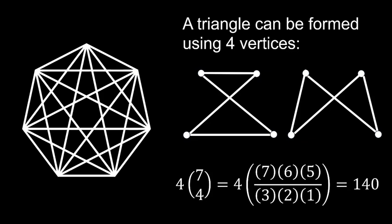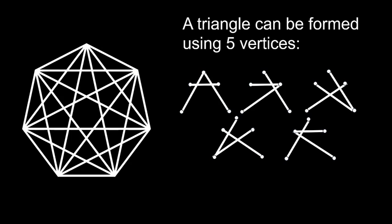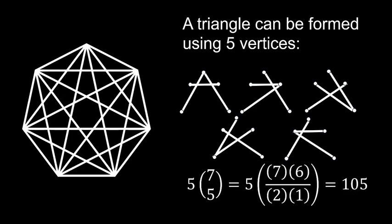When selecting any five vertices, we can create five distinct triangles. The number of such combinations is calculated as 7 choose 5. Multiply this by five, and we find that there are 105 unique triangles formed in this way.